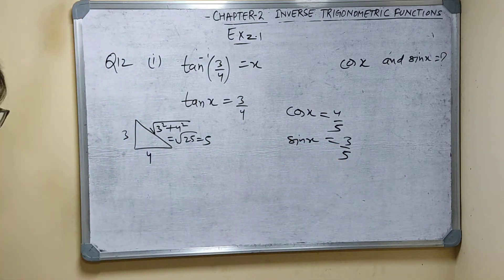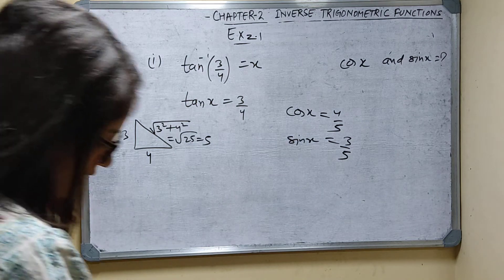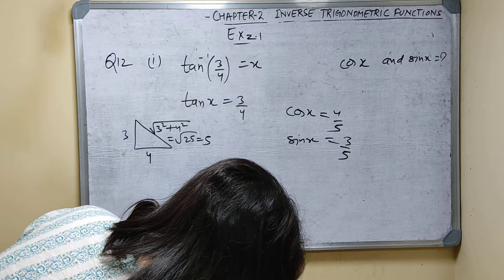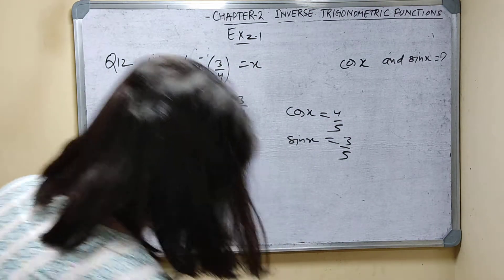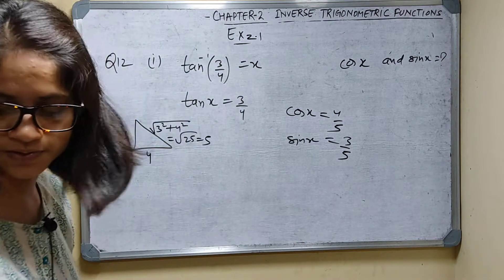So cos x equals 4 by 5 and sin x equals 3 by 5. These are the answers.